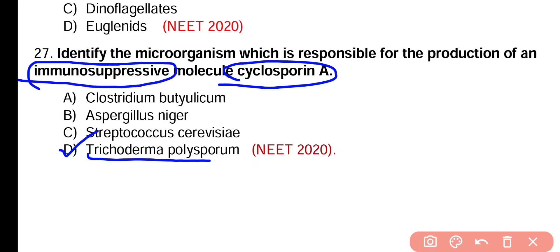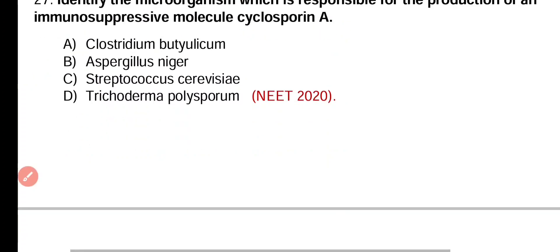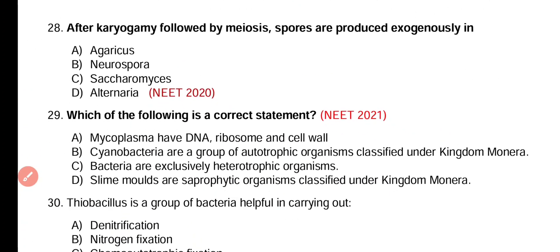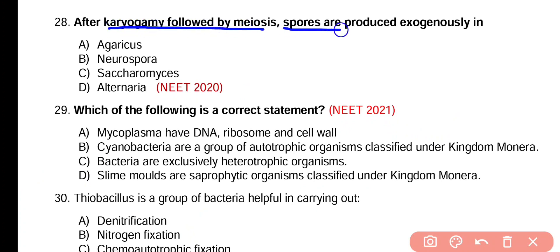Question number 27. Which microorganism is responsible for the production of the immunosuppressive molecule cyclosporin A? Clostridium butylicum, Aspergillus niger, Saccharomyces cerevisiae, or Trichoderma polysporum. Correct answer is option D. Trichoderma polysporum produces cyclosporin A, which acts as an immunosuppressive agent in organ transplant patients.